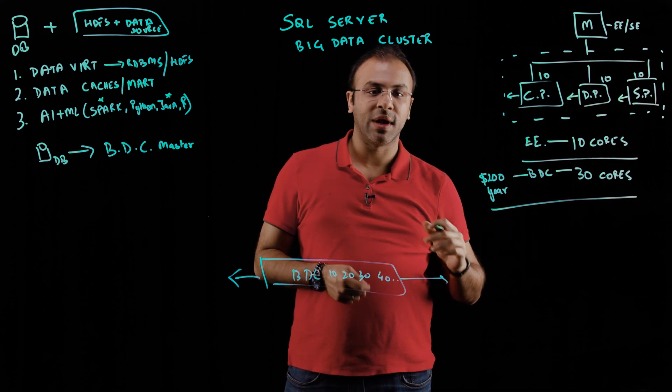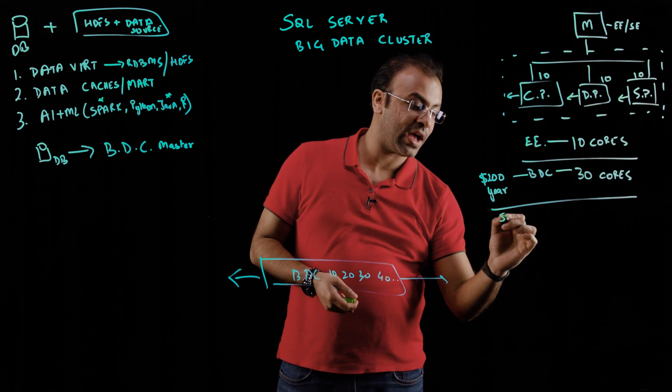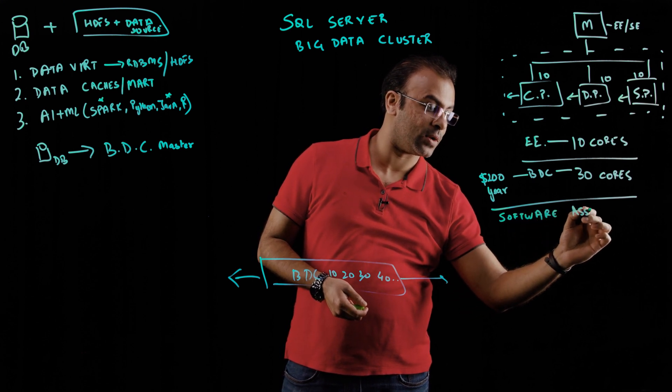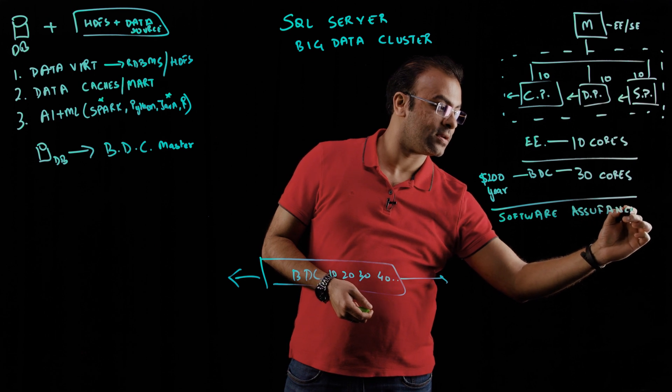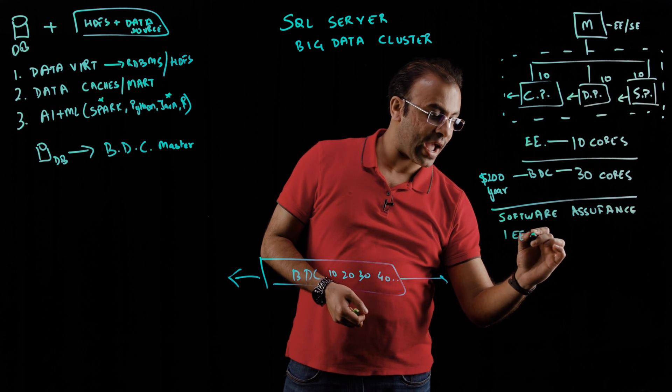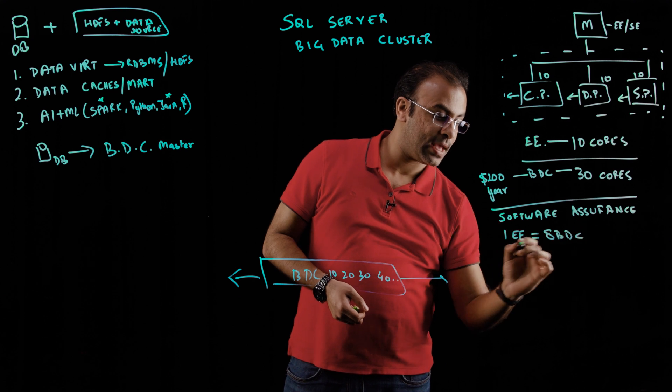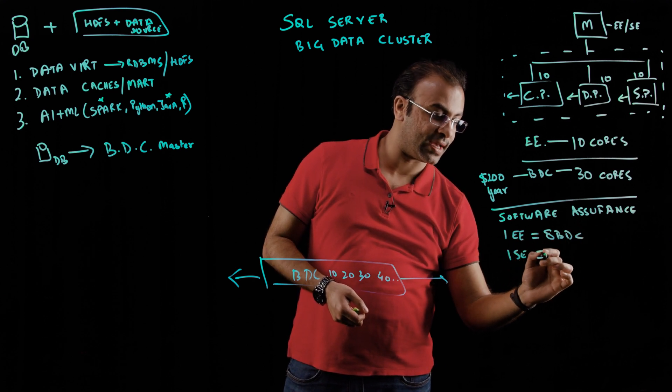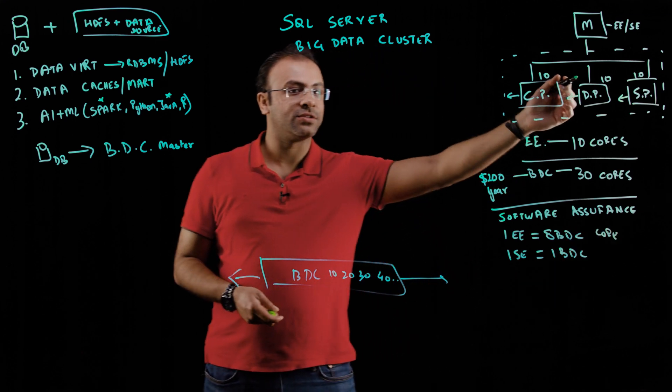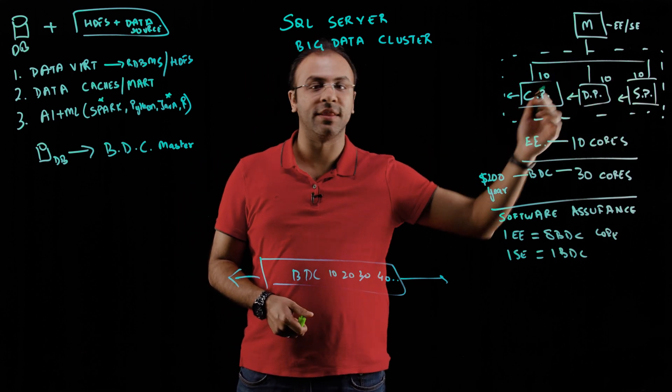The interesting piece comes when you need more. Do you need to go buy? The simple answer is yes, but if you have software assurance, which is a licensing benefit you can enjoy with enterprise agreements with Microsoft, what that allows you to do is for each enterprise edition core, you get an entitlement of eight big data cores. And if you have a standard edition core in the master, you get one big data core.